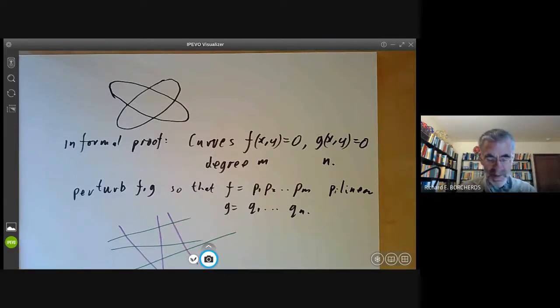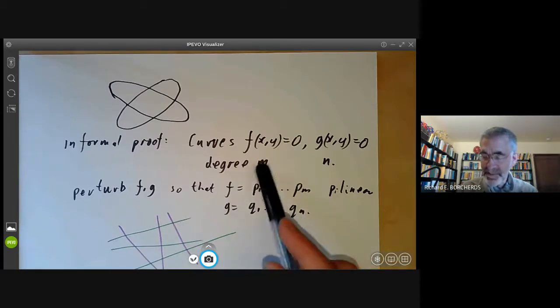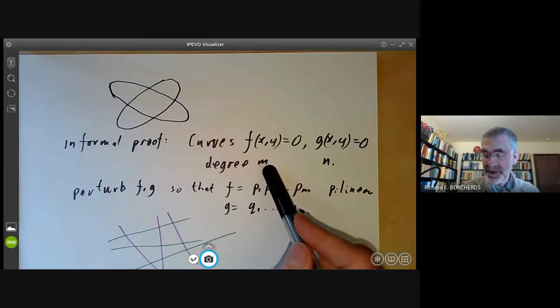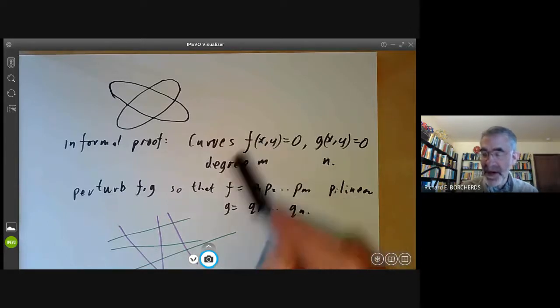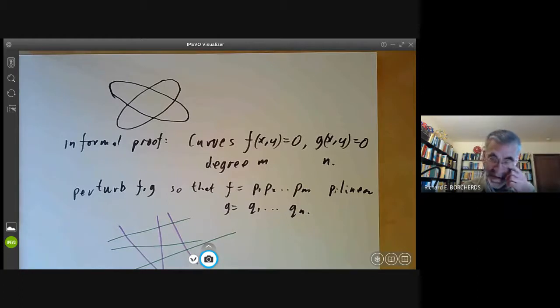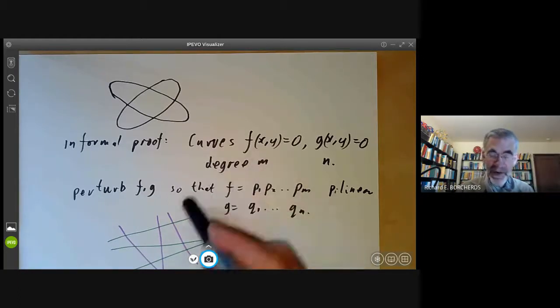Well, there are several things rather doubtful about this proof. The main one being, how do we know the number of intersection points doesn't change if we perturb f and g? And we run into all sorts of problems because as we perturb f and g, we might get multiple points and so on. So this is really unclear.